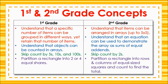In first grade, students partition a rectangle into two or four equal shares. In second grade, students partition rectangles into rows and columns of equal sized squares and count to find the total. The early experiences in first grade have prepared second graders to extend their understanding of counting objects or squares in arrays to creating the arrays and using repeated addition to find the total.